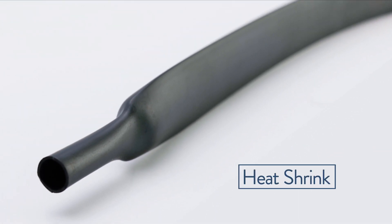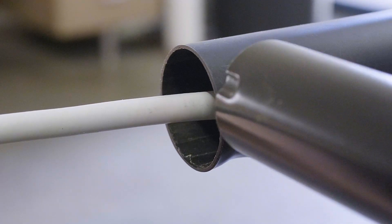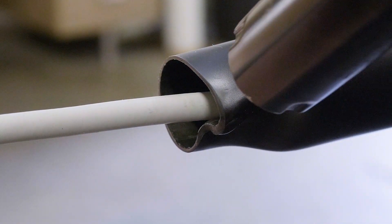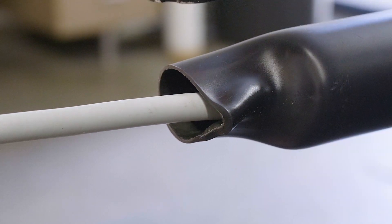Heat shrink tubing is a stretched plastic tube typically made from polyolefin. When heat is applied, the tube shrinks and grips tight to cables, connectors, cable joints, and terminals.